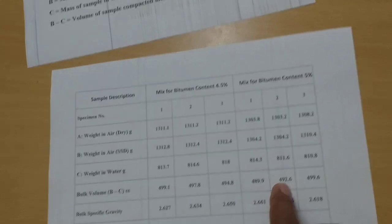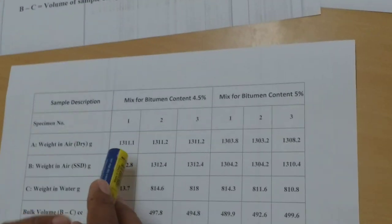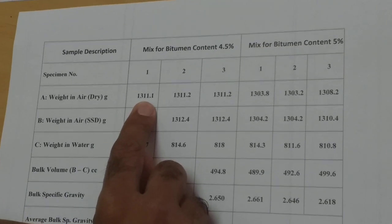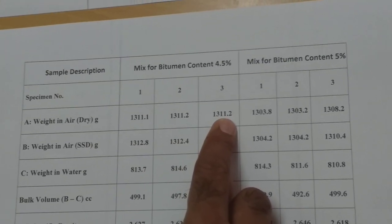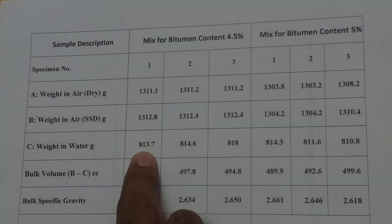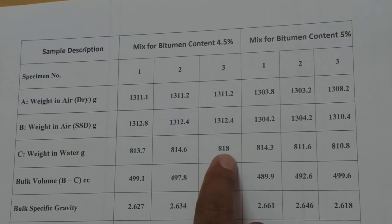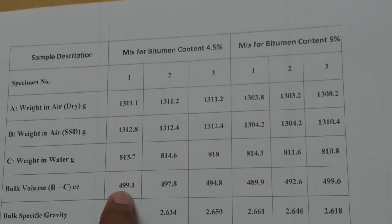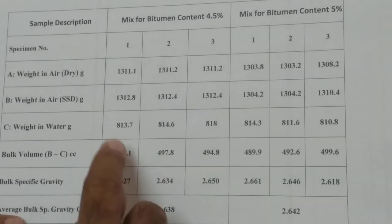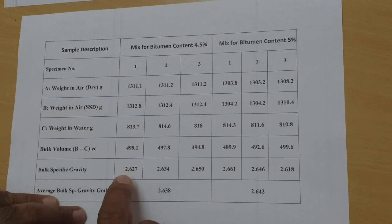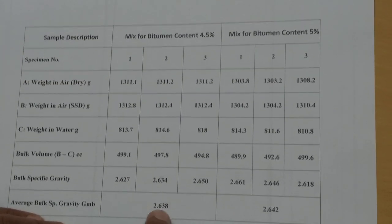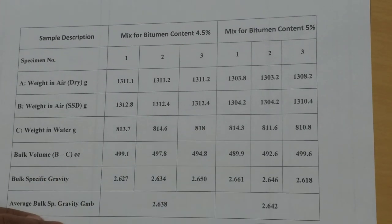Bitumen content is now increased to 4.5%. The dry weight of first, second, and third specimen; SSD weight of first, second, and third. The volume is calculated by the difference of B and C for each specimen. Dividing dry weight by volume gives the specific gravity for each, and the average specific gravity is obtained. You can see that the specific gravity continues to increase with increasing bitumen content.